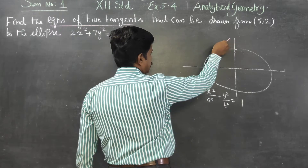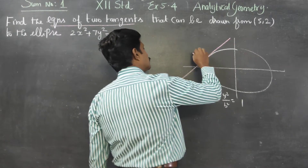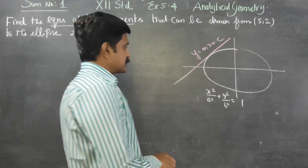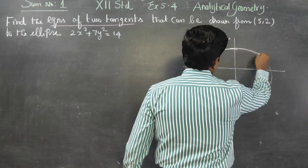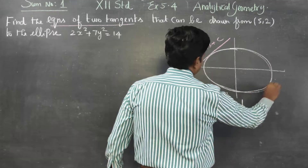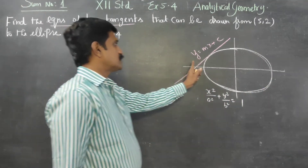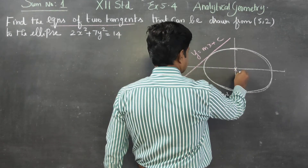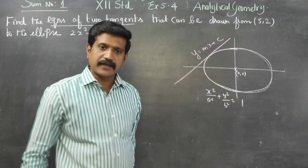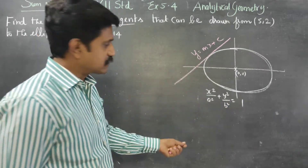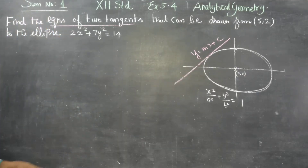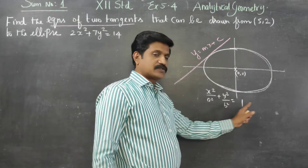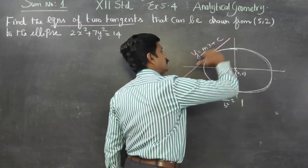I am going to draw a tangent to this ellipse. Let this tangent be y = mx + c. A tangent is of the form y = mx + c. I am taking a standard ellipse with origin as its center, so x²/a² + y²/b² = 1. The tangent equation y = mx + c is a tangent to this ellipse.